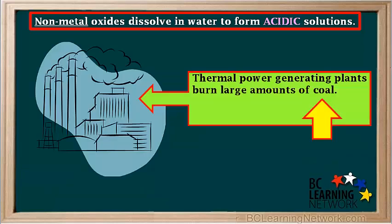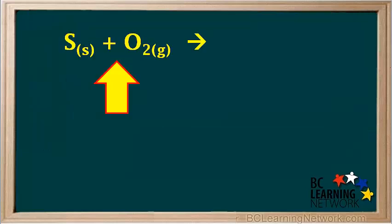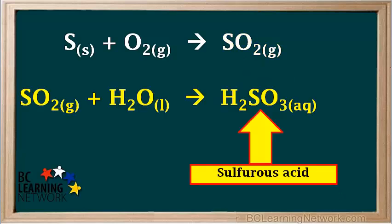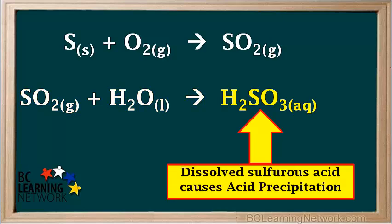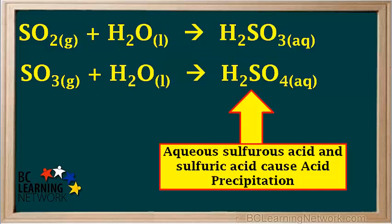One source of acid precipitation caused by humans are thermal power generating plants that burn coal. Coal and other fossil fuels contain small amounts of the nonmetal sulfur. When these fuels burn, the sulfur present burns in air to produce SO₂, or sulfur dioxide, which is a nonmetal oxide. Sulfur dioxide dissolves in rainwater to produce sulfurous acid, causing acid precipitation. Burning fossil fuels and other industrial processes also release SO₃ into the atmosphere, producing both sulfurous and sulfuric acids, which cause acid precipitation.